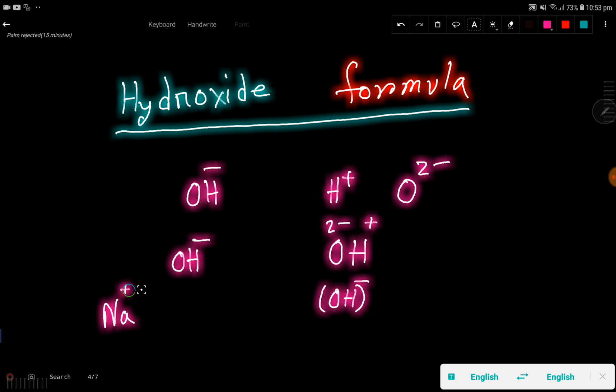You know that sodium is an element of group 1, so it will have 1 plus. Sodium hydroxide - this is hydroxide minus. One minus will vanish, one negative charge, one positive charge. So we are getting sodium hydroxide, NaOH.